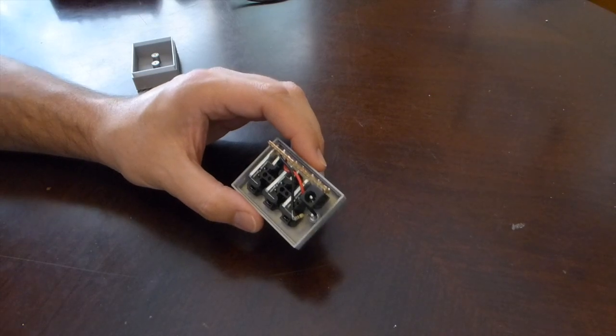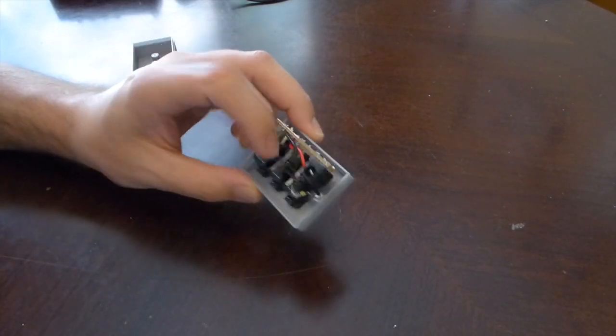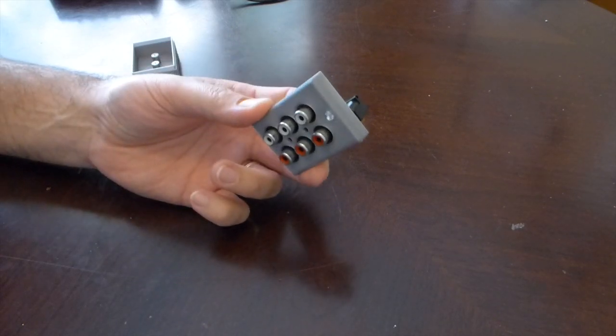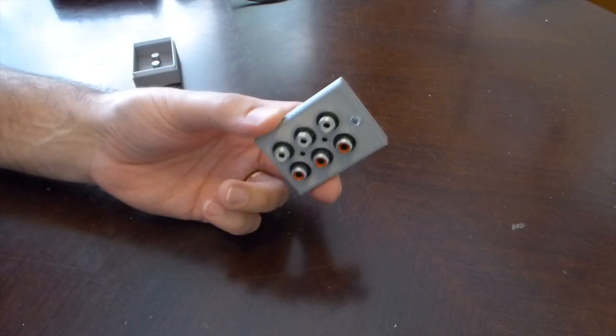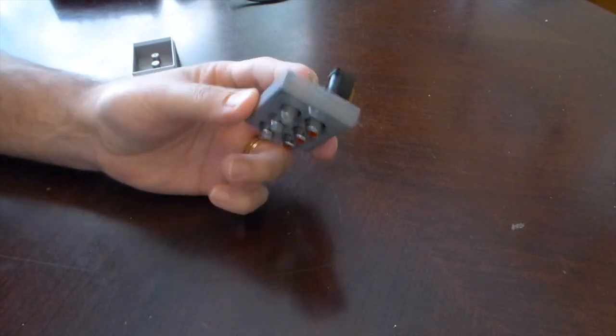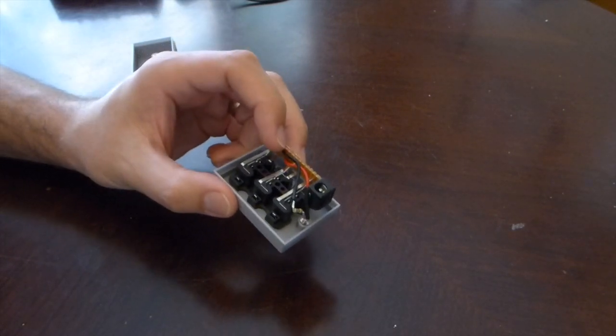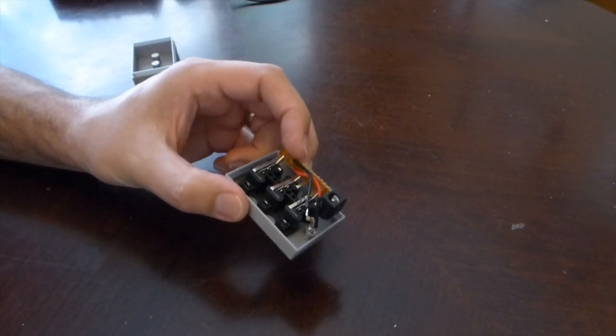Alright, so here's what it looks like inside the enclosure, the top of the enclosure. I added an LED here just to serve as a status LED. That way I know that the box is getting power if I'm trying to troubleshoot something. This is just a red LED that I wired into the positive and negative side of the circuit here.